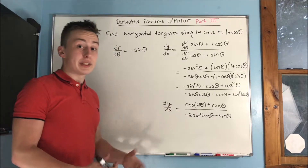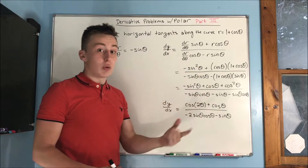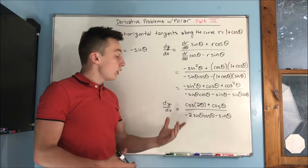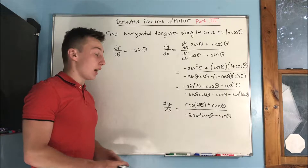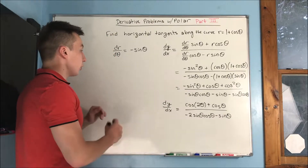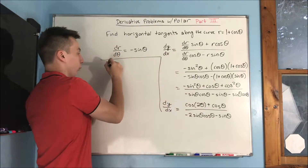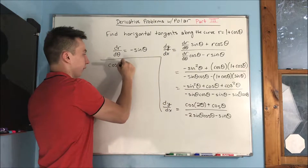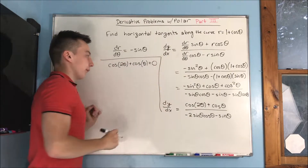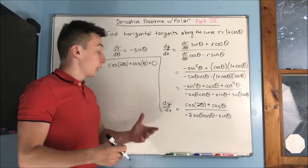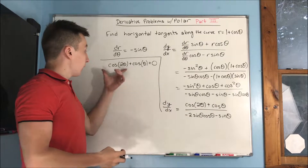We're finding horizontal tangents, which means we need to find where the numerator is zero. At the same time, we don't want the denominator to be zero, so we'll have to check both. Setting the numerator equal to zero: cosine of two theta plus cosine of theta equals zero.